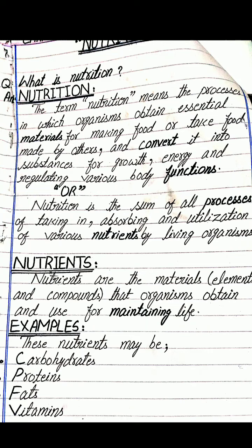The first question we are going to revise today is about nutrition — what is nutrition and what are the examples of nutrition. Nutrition basically means the processes in which organisms obtain essential materials for making food, or take food made by others and convert it into substances for growth, energy, and regulating various body functions.